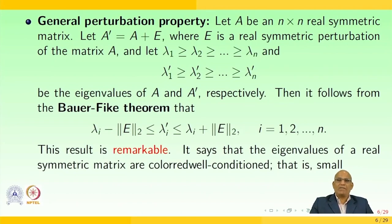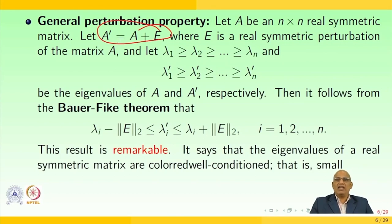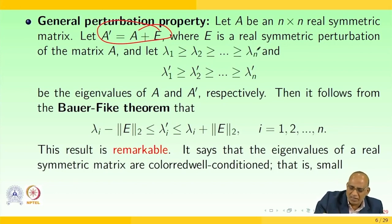Now, general perturbation theory. Let A be an n by n real symmetric matrix. Let A prime equal A plus E, where E is a real symmetric matrix. Let A prime be a symmetric perturbation of the matrix A, and let lambda 1 greater than or equal to lambda 2 ... greater than or equal to lambda n, and lambda 1 prime, lambda 2 prime, ..., lambda n prime be the eigenvalues of A and A prime respectively.